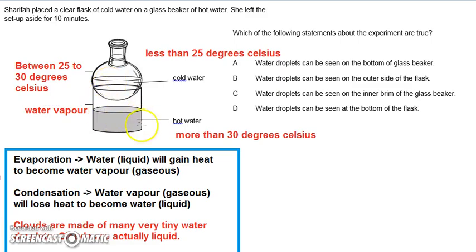Remember that condensation can only occur when water vapor loses heat. Evaporation can only occur when water gains heat.